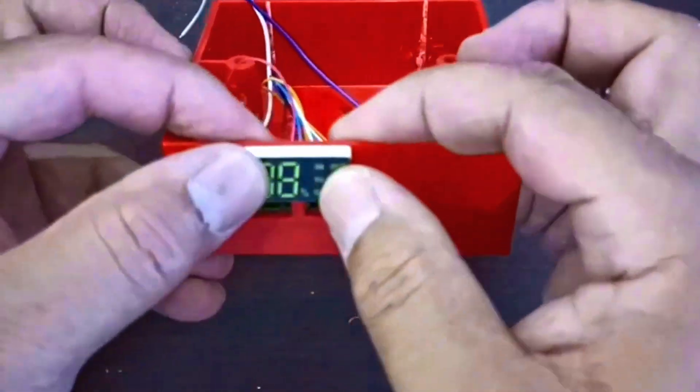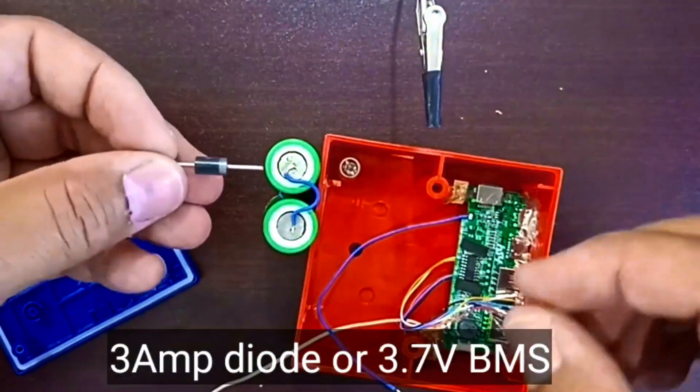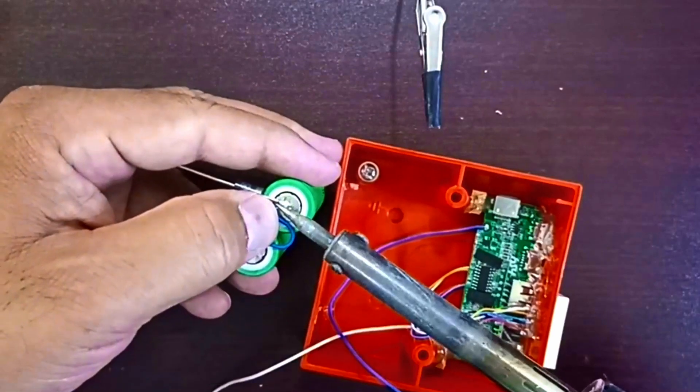Now to protect the circuit, we'll add a 3 amp diode. This stops power from flowing the wrong way when the sun goes down.